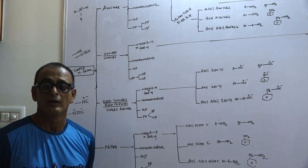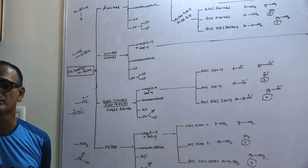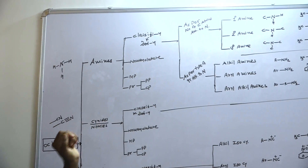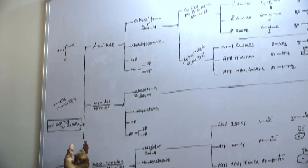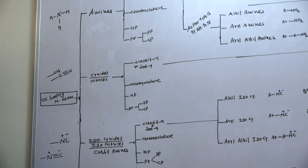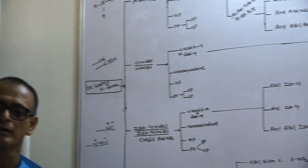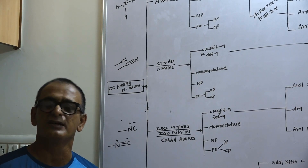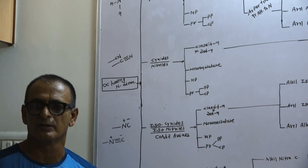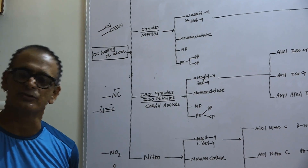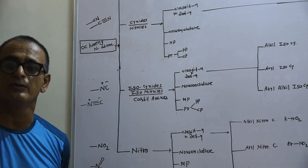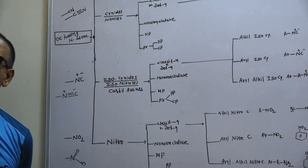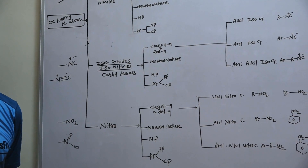If an amino group is present in the compound, they are known as amines. If a cyanide group or nitrile group is present, these compounds are known as nitrile compounds. If an isocyanide or isonitrile group is present, these compounds are known as isonitrile or carbylamine compounds. If the NO2 nitro group is present as a functional group, these compounds are known as nitro compounds.